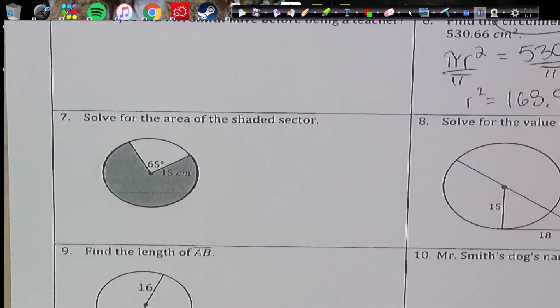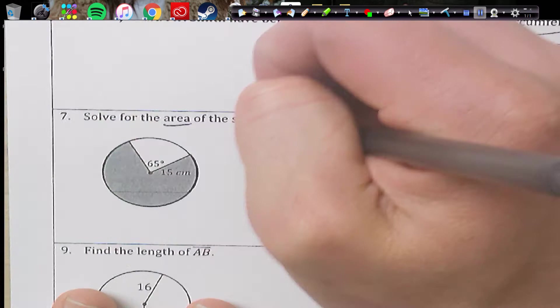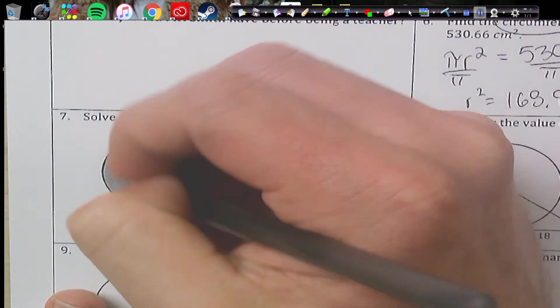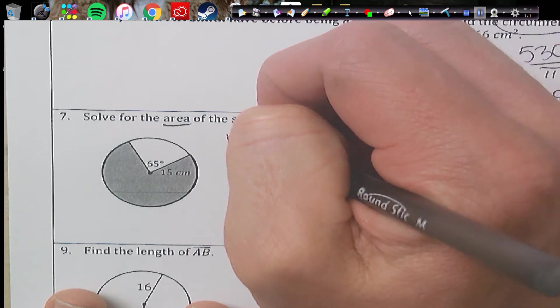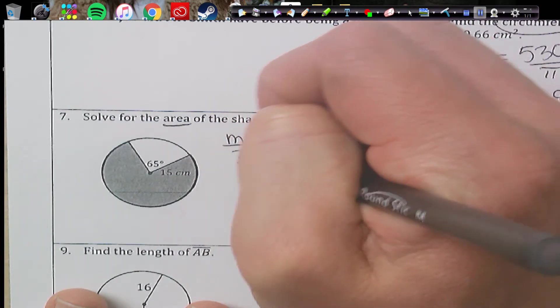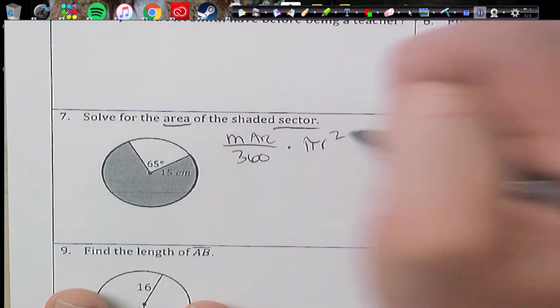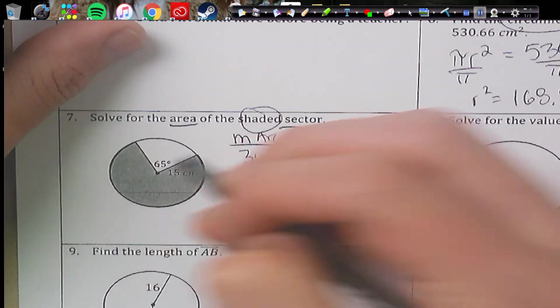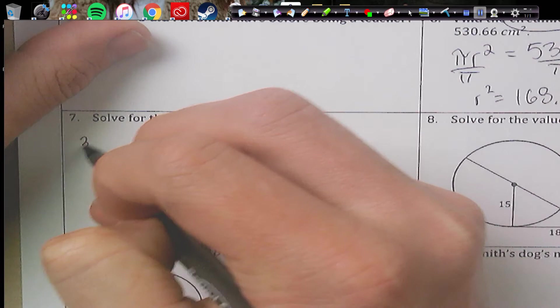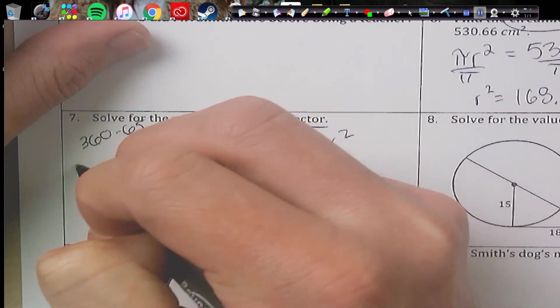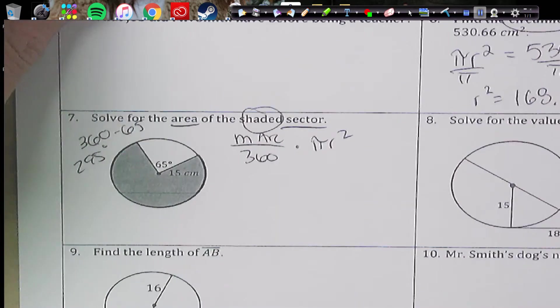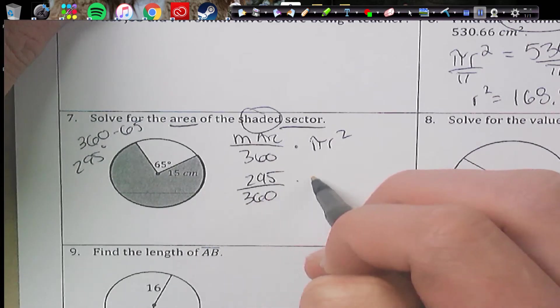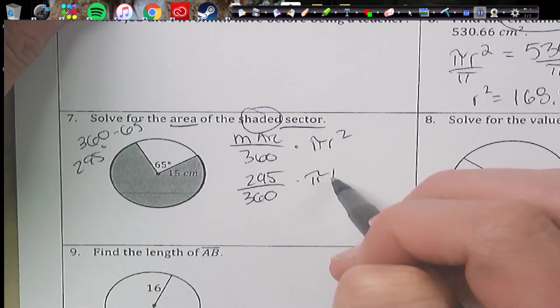Number 7. I can't believe how many people messed up on this, but we're finding the area of a sector. So that's going to be the measure of whatever arc. In this case, we don't have an arc, but the measure of the arc over 360 times πR². Now, I'm looking for the shaded region. So not 65, but I'm going to go ahead and do 360 minus 65, and I get 295.